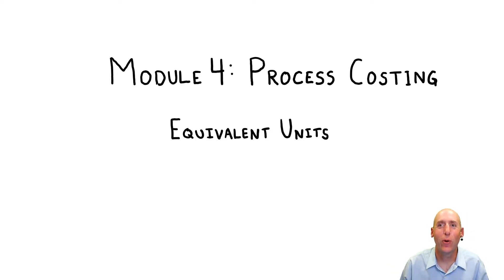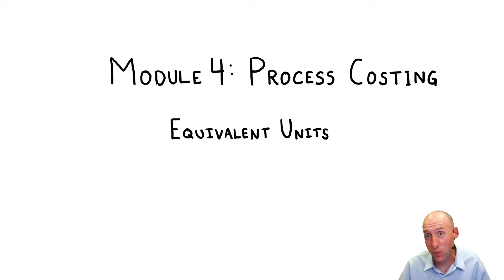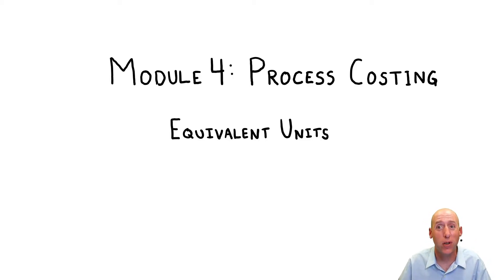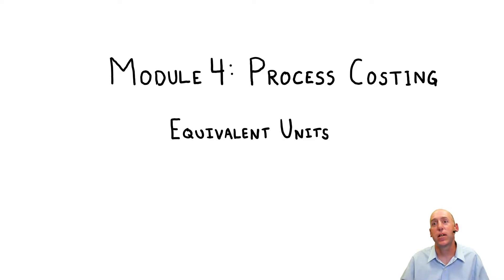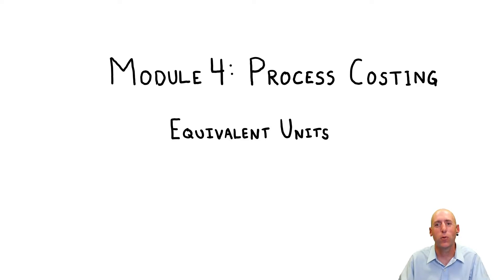Welcome to Module 4 of our course on Management Accounting. This module is all about process costing. You'll recall from last chapter, we distinguished between process and job order costing. Companies that want to use job order costing make a custom product. Companies that use process costing make a pretty uniform product — picture a conveyor belt with hundreds or thousands of the same kind of product whizzing by.